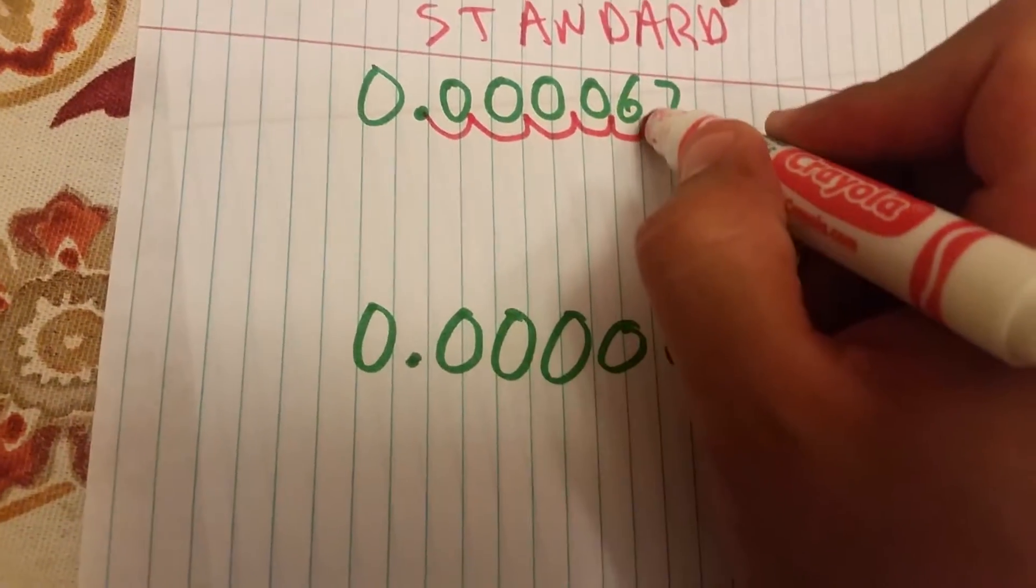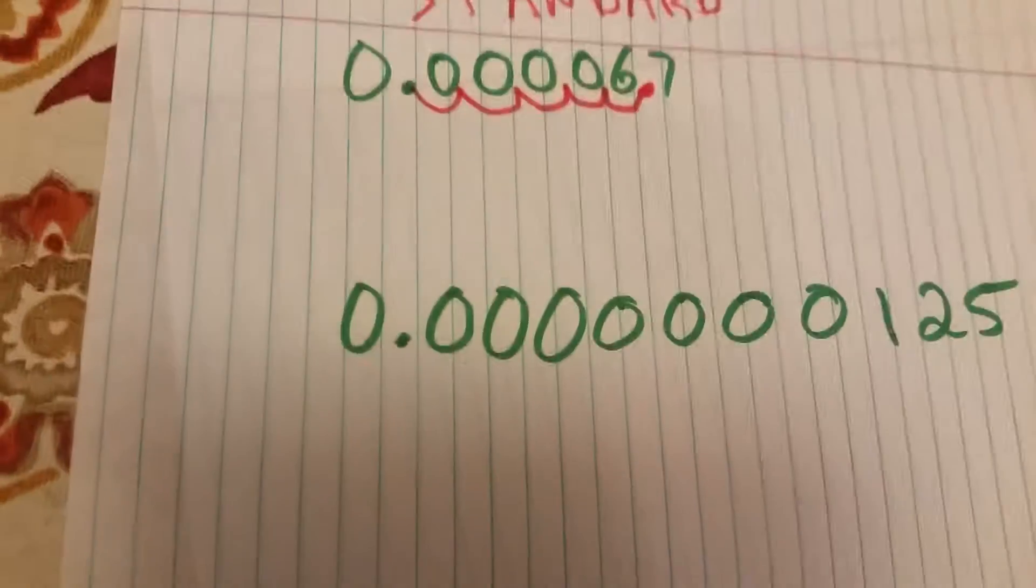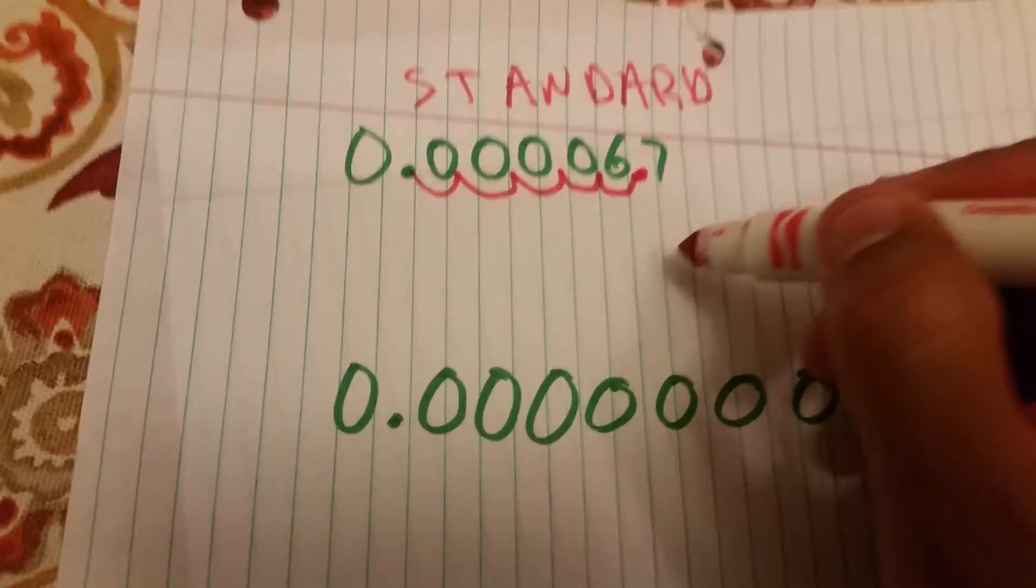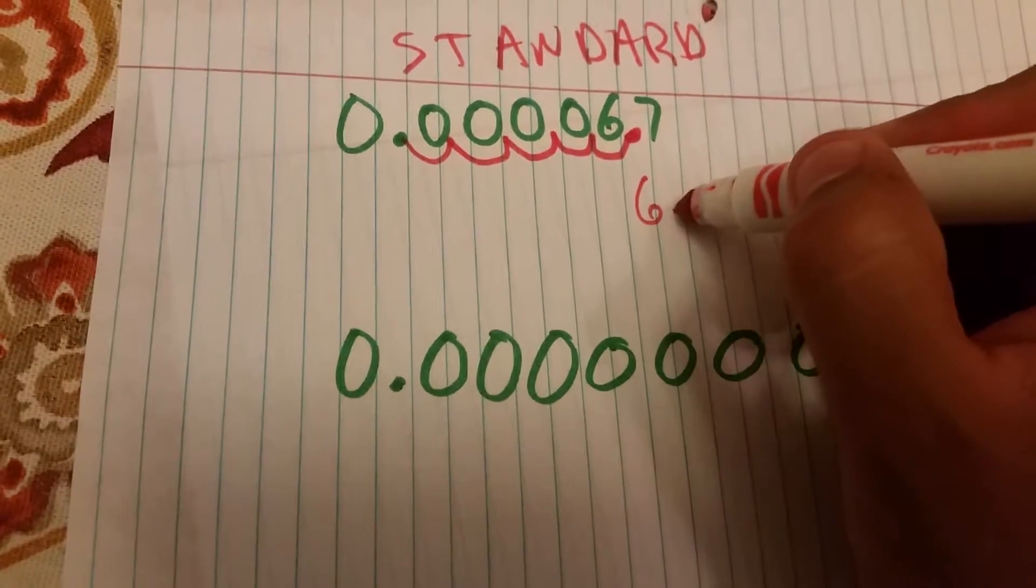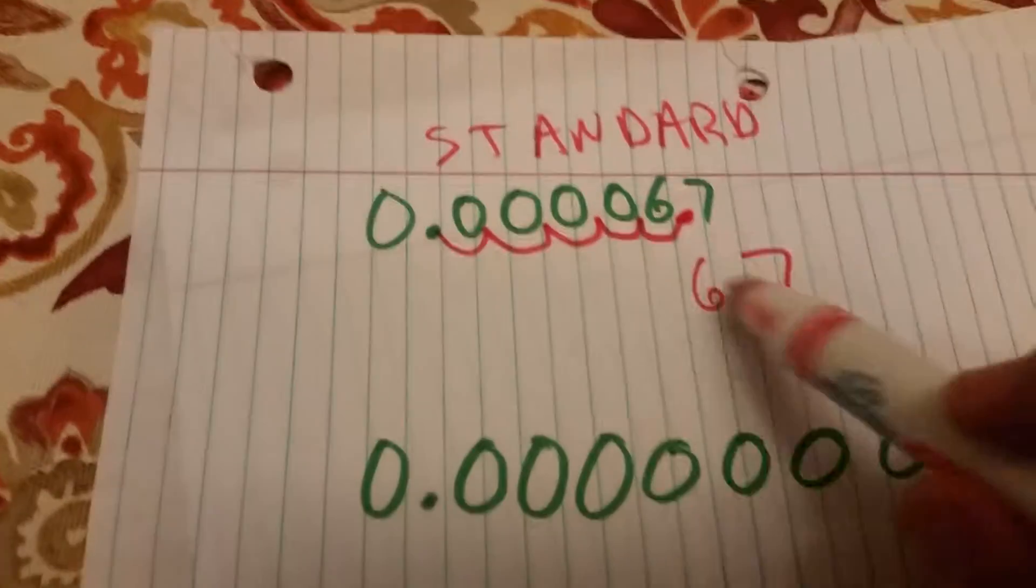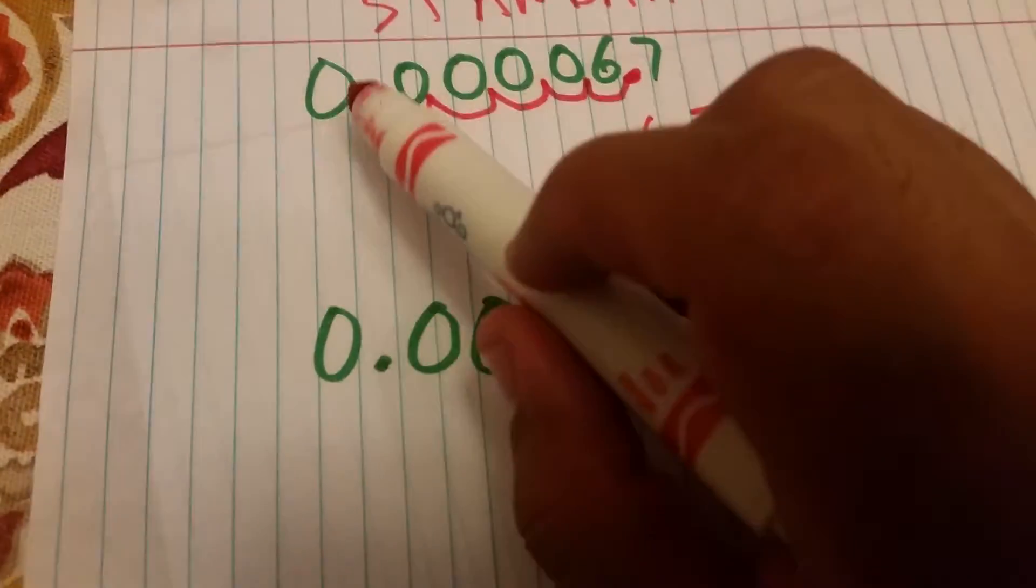So I'm going to move the decimal once, twice, three times, four times. In this case it's going to be five times. Once I move the decimal five times I have the number 6.7.